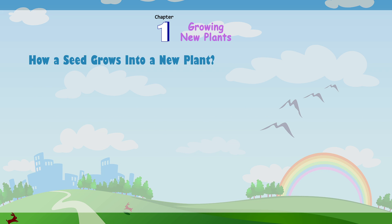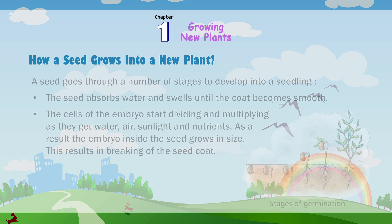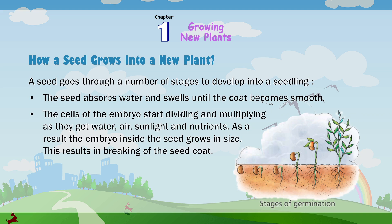How a seed grows into a new plant. The process of growing a seed into a seedling is called germination. Seeds remain inactive until the conditions are favorable for germination. All seeds need water, oxygen, and proper temperature for germination. A seed goes through a number of stages to develop into a seedling. The seed absorbs water and swells until the coat becomes smooth. The cells of the embryo start dividing and multiplying as they get water, air, sunlight, and nutrients. As a result, the embryo inside the seed grows in size, resulting in breaking of the seed coat.